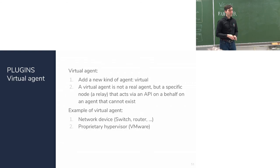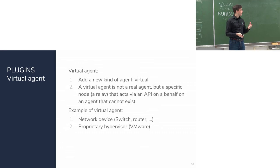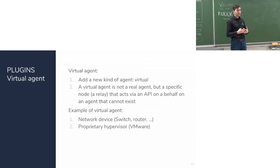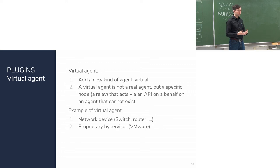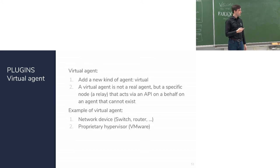The virtual agent plugin introduces a new kind of agent that wouldn't be a real agent but would act on behalf of something else. For example, a relay could act on behalf of something behind it because writing a real agent for some machine types is impractical. A concrete example: an agent for network devices — rather than writing an agent that runs on a switch or router, a virtual agent would use an API to configure the switch from another node. The same could apply to VMware and other tools.